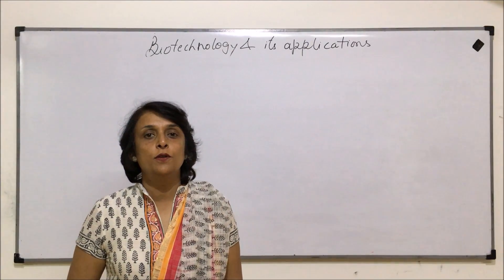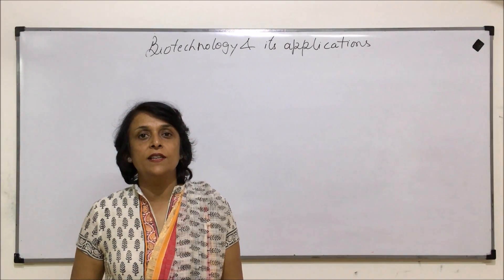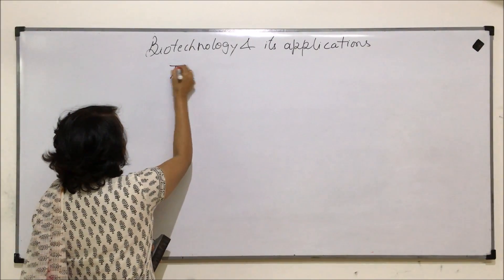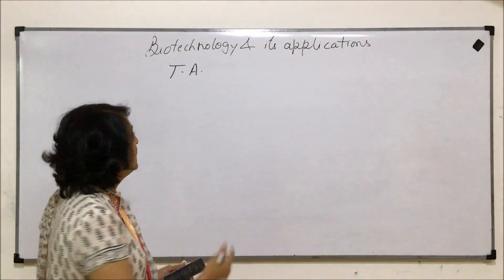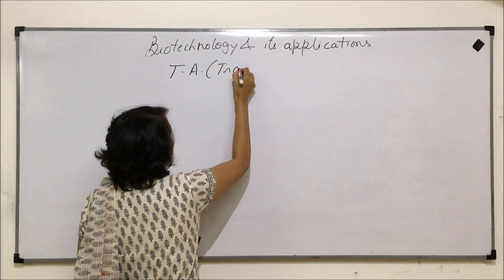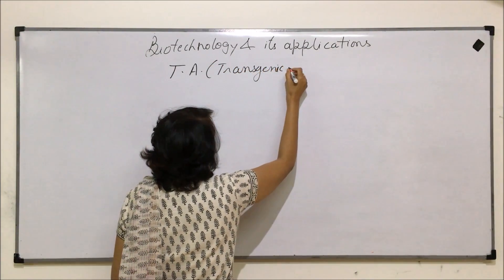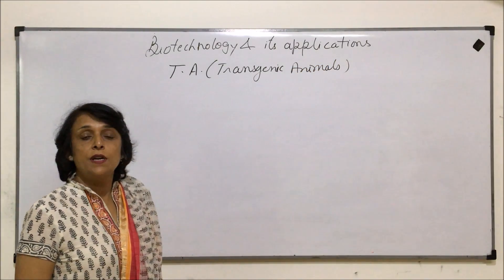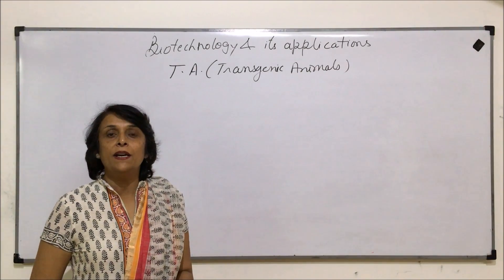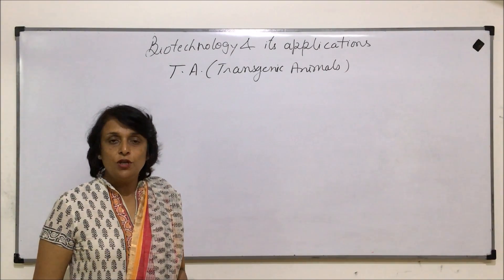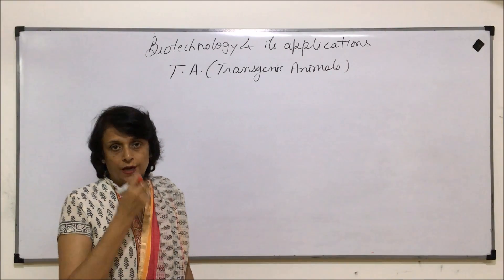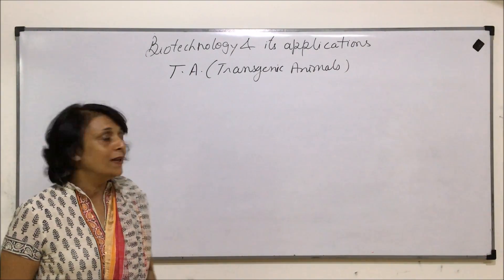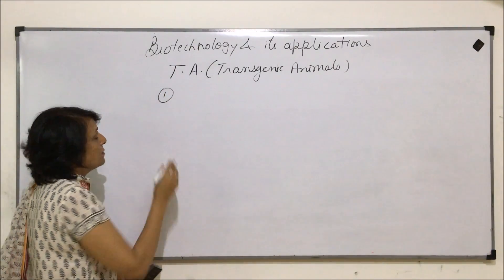This is our last video for biotechnology and its applications. Here we are talking about transgenic animals — the abbreviation used is TA. These are animals whose genetic makeup has been modified either by introducing a new or foreign gene, or by modifying their own genetic material. There are a few very important reasons why we want these transgenic animals.